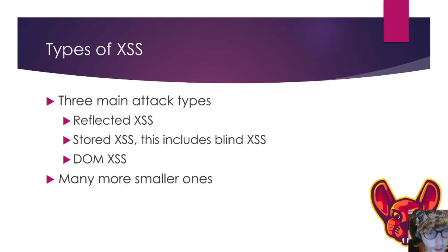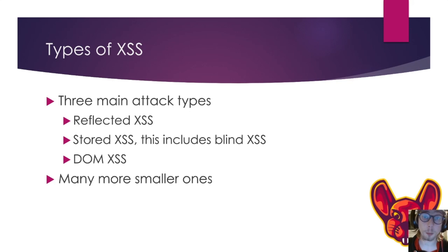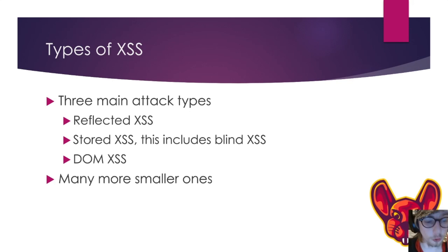There are basically three main attack types. I know there are many more — I call them 'smaller ones' here, but technically that's not correct; I should say 'less researched ones,' which doesn't mean they're less prevalent in the wild. The three main types are: reflected cross-site scripting, stored cross-site scripting (which also includes blind XSS), and DOM cross-site scripting. We'll cover reflected, stored, and DOM — blind XSS will be in a separate video.